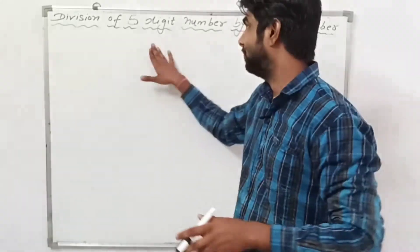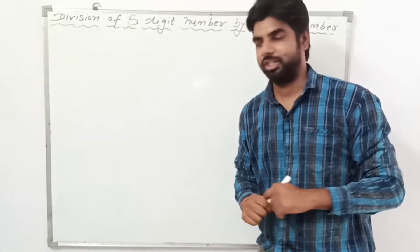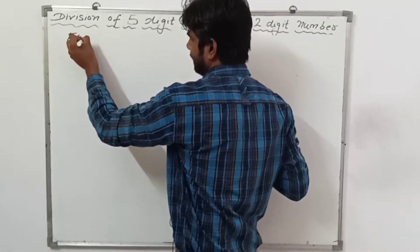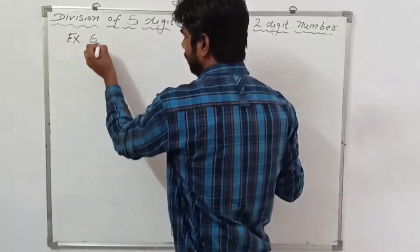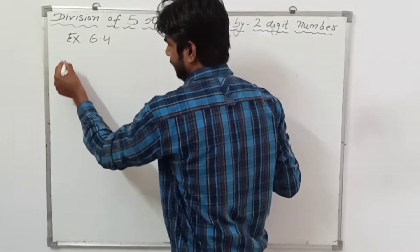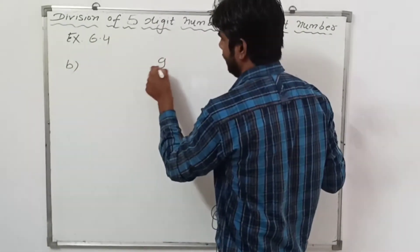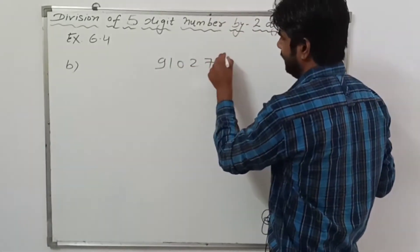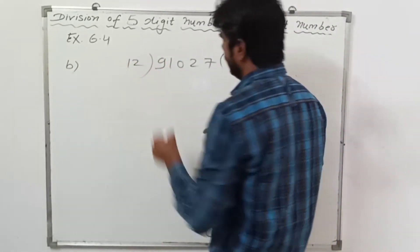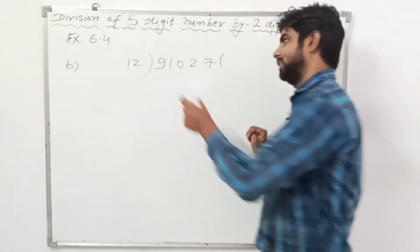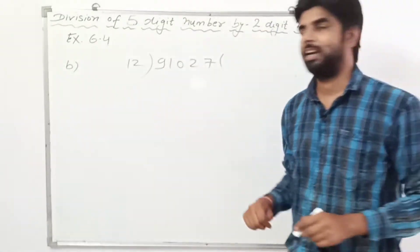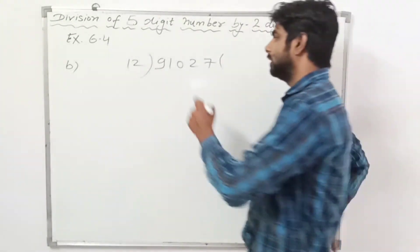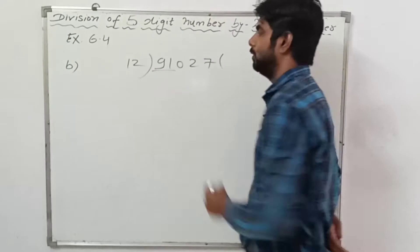Let's see how we can divide a five-digit number by a two-digit number. So let's take one example from exercise 6.4, question number b. I am writing 91027 divided by 12. This number is of five digits and we have to divide it by 12, which is a two-digit number.